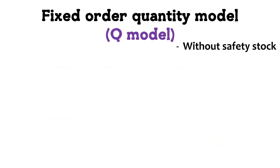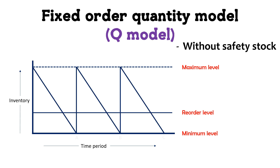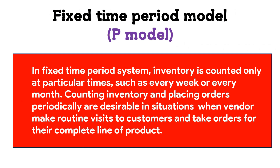In the fixed order quantity model without safety stock, the diagram shows only three levels: maximum level, reorder level, and minimum level. There is no safety stock maintained. Whenever inventory reaches the minimum level, that is called the reorder point, and in this model inventory decreases at a constant rate.